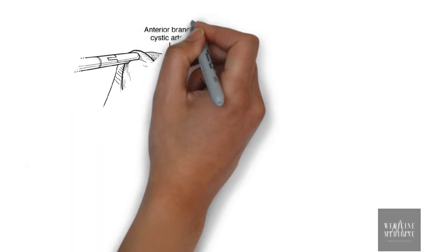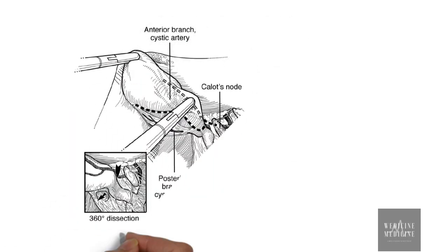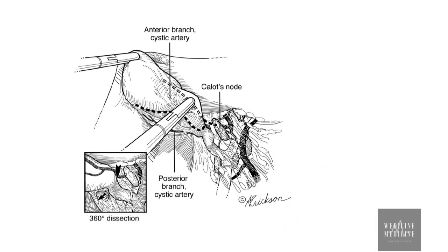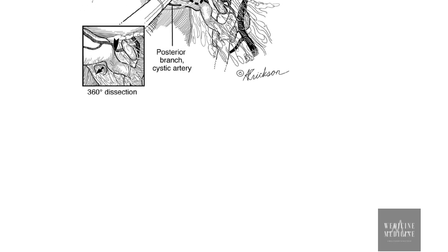Gallbladder is removed along with cystic duct close to its junction with common bile duct, and this lymph node is located just above the point where cystic duct and hepatic duct join to form common bile duct. So, this is an important anatomical landmark and this completes our session on Calot's triangle.